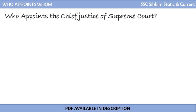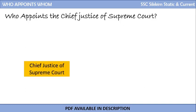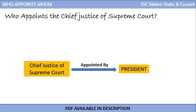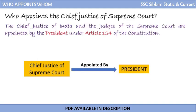Who appoints the Chief Justice of the Supreme Court, or Chief Justice of India? The correct answer is that the Chief Justice of the Supreme Court is appointed by the President. The President appoints the Chief Justice of India and also the judges of the Supreme Court under Article 124 of the Indian Constitution. Remember the name of this article — Article 124.